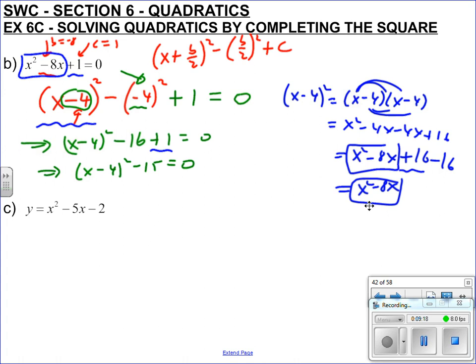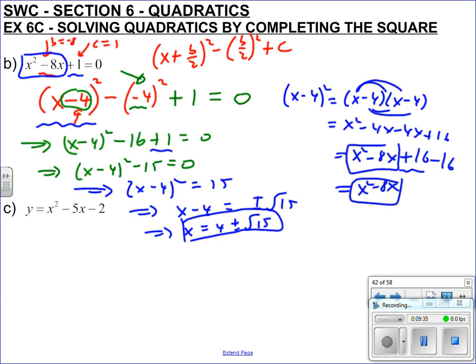And then let's solve it. So again, we make x minus 4 squared by itself, make that equal 15, square root both sides, but don't forget the plus or minus, and then add the 4 at the end. And box your answers. Last one.